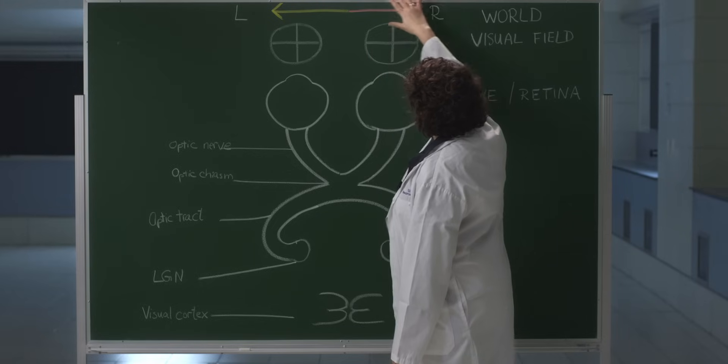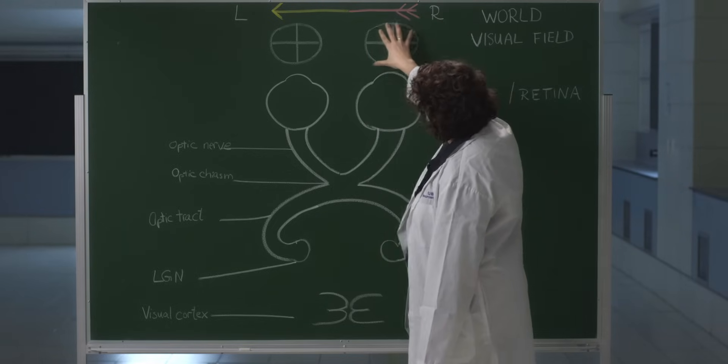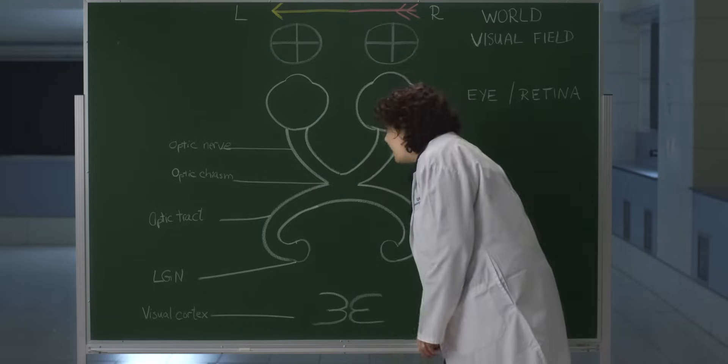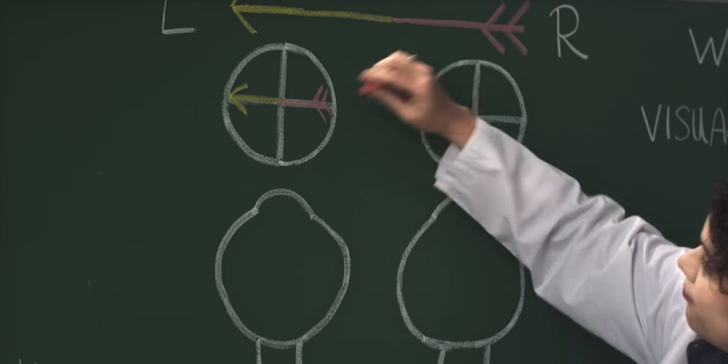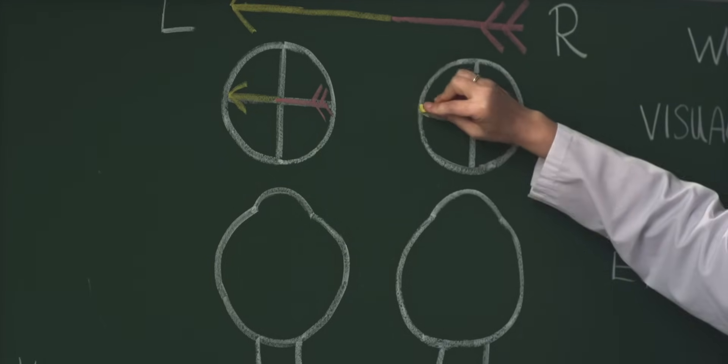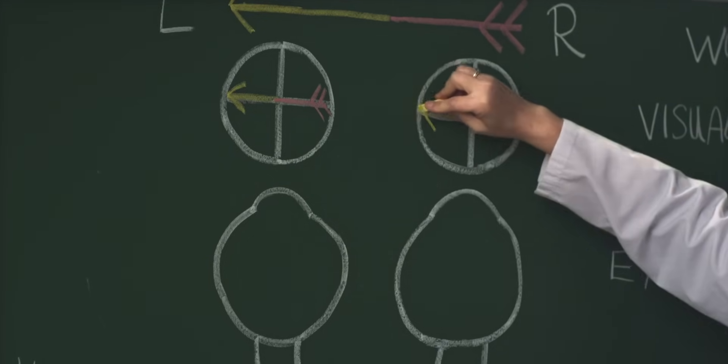The world around us is represented by this arrow. These two circles represent what is seen by each eye. You can close one eye and still see the entire arrow, and the same is true for the other eye. These are the visual fields for each eye.